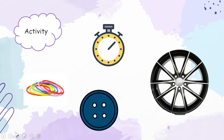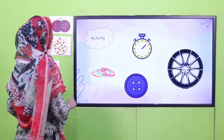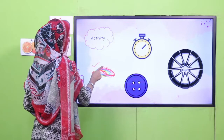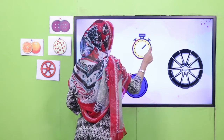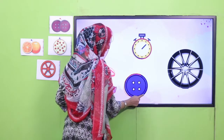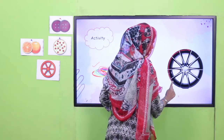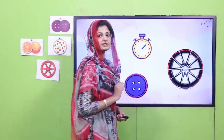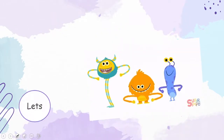Now there's another activity. I want you to trace your finger on every picture and try to name it. What are these? These are bangles — and what is the shape of a bangle? Circle shape. What is this? This is a stopwatch — what is the shape of a stopwatch? Circle. And what is this? This is a button, which also has a circle shape. And this is a wheel — which shape does it have? It has a circle shape. Excellent! If you want, you can pause the video and try it individually.